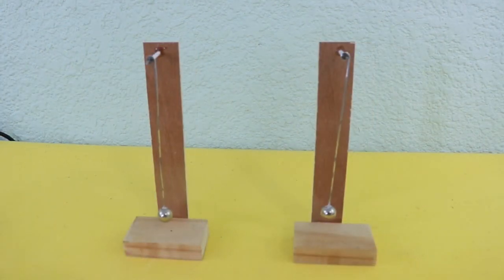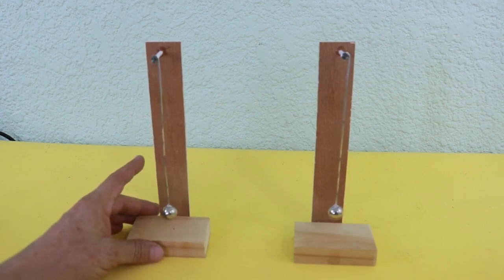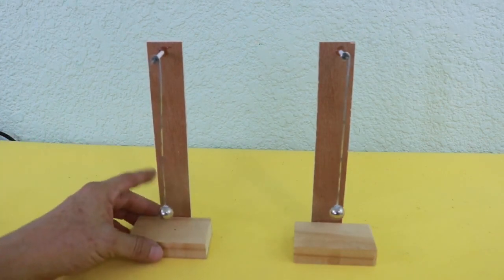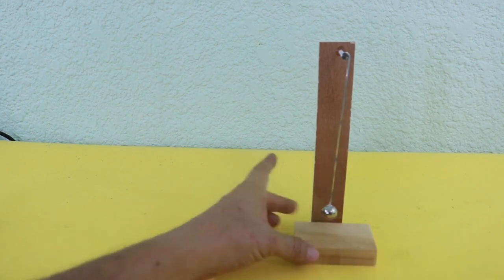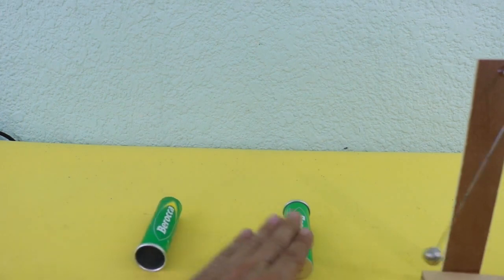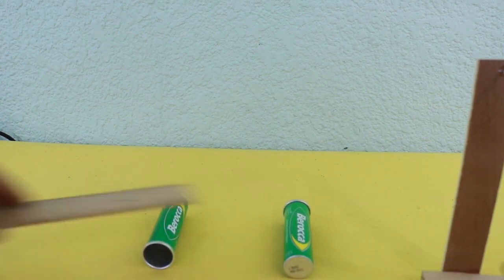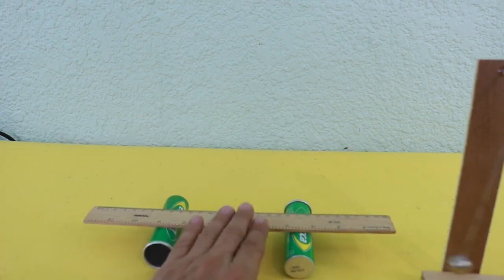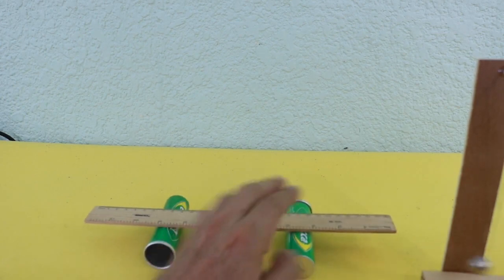However, when the pendulums are coupled, that is, they are on a base that can move. For example, I place these two cylinders and a ruler above, so this can move in this way.